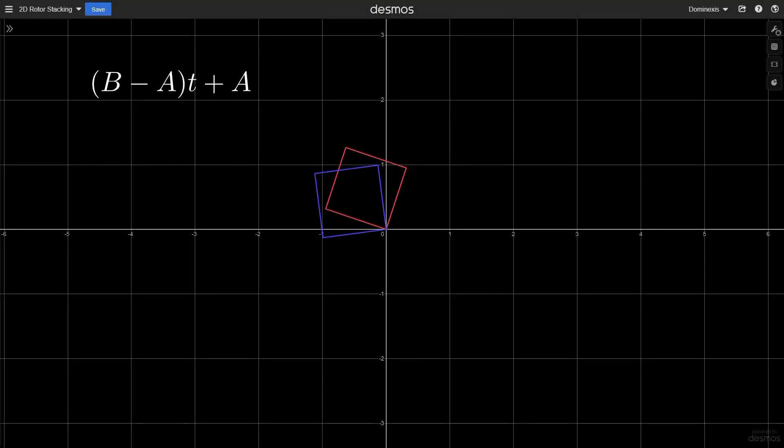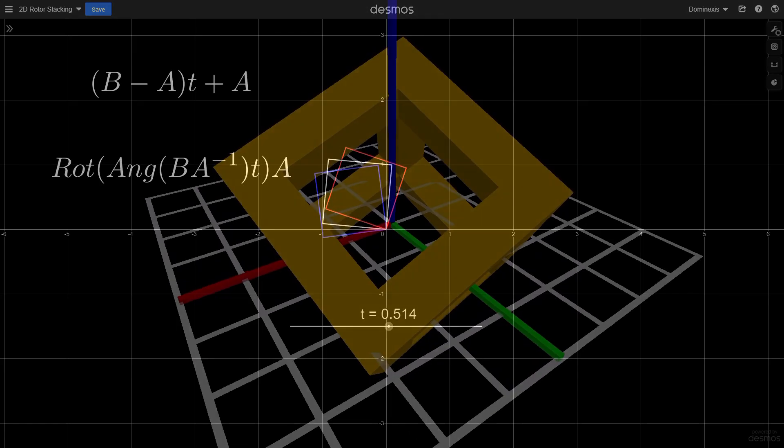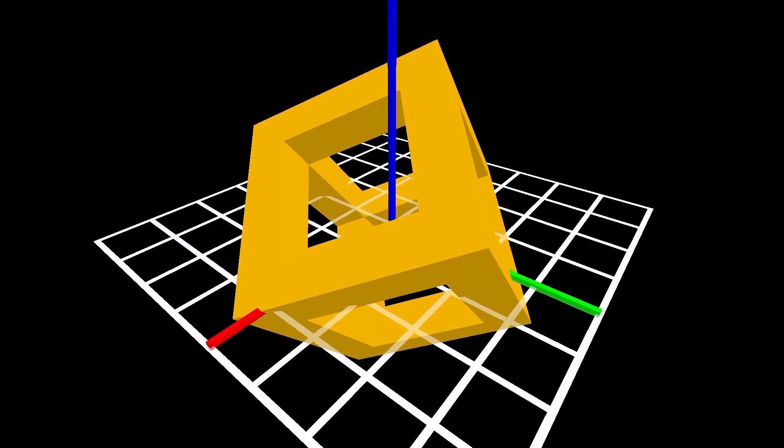This process of extracting the angle out of a rotor I've come to call linearizing the rotor. This is because in angle form, we are able to scale it, and that translates directly to the rotation as a linear scale of the transformation. Now that we know how to linearize 2D rotors, let's apply the linear interpolation formula to it to interpolate some rotations. We begin by taking the difference between the two rotations. Then we convert the resulting rotor into an angle. Then we scale it, and convert it back into a rotor. Finally, we use this rotor as a transformation on the first rotation. And that's it, we've linearly interpolated rotation in two dimensions. By sliding the t value back and forth, we are able to move the rotation between the start and end continuously.